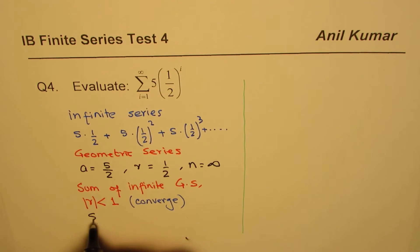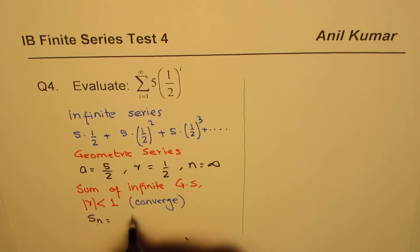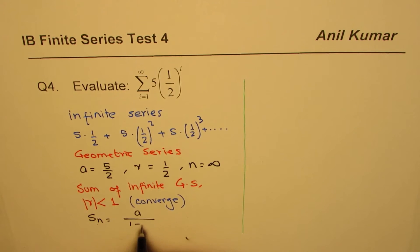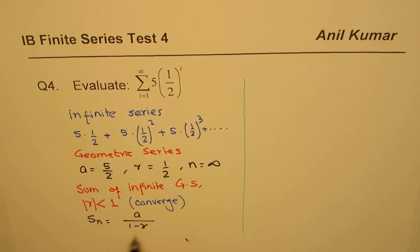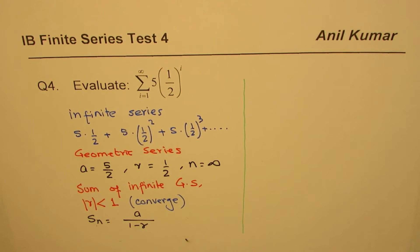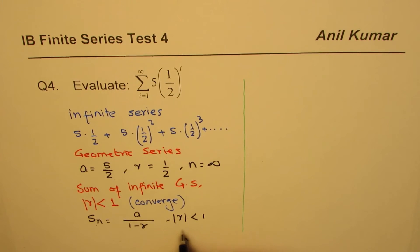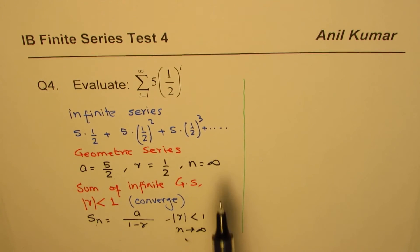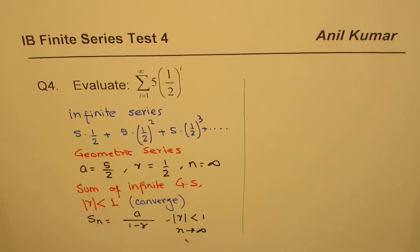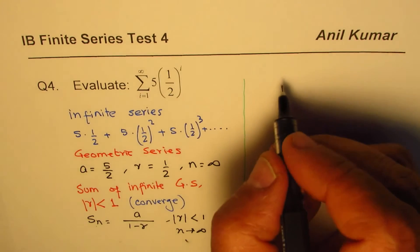So here the formula for the series is S_n equals a over one minus r, since r is less than one. The sum is always positive for such a series. It should be one minus r, so that's the formula. This is when absolute value of r is less than one and n is approaching infinity, a very large number. Now I think we can evaluate the value.